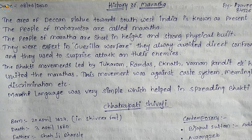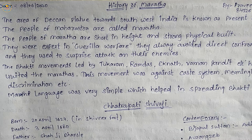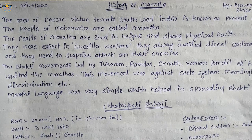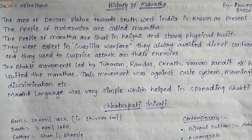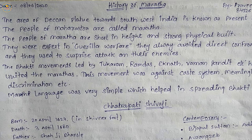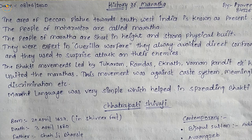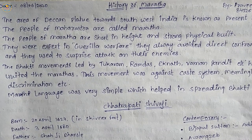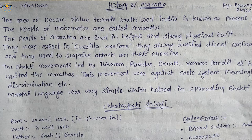Shivaji is the contemporary of Mughal Emperor Aurangzeb. When Aurangzeb saw the power of Chhatrapati Marathas rising in different parts of India, he wanted to suppress the Maratha ruler Chhatrapati Shivaji. The Bhakti movement, led by Tukaram, Ramdas, Eknath, and other saints, helped further unite the Marathas to fight against Mughal rulers. This movement was against the caste system, meaningless rituals, and discrimination. The simple Marathi language also helped in spreading the Bhakti movement.